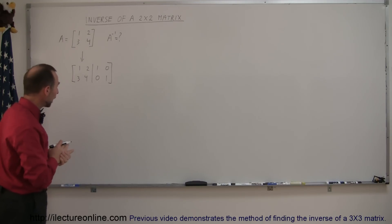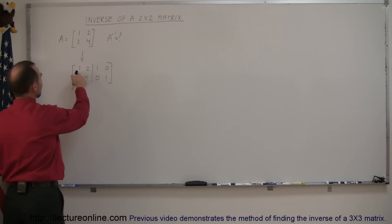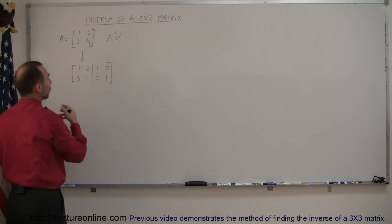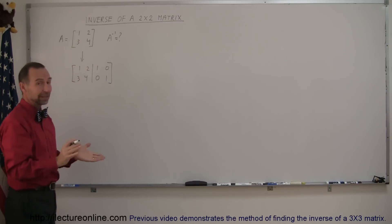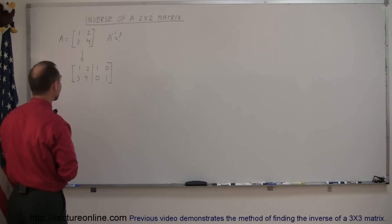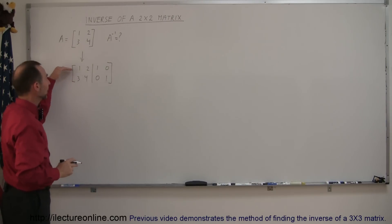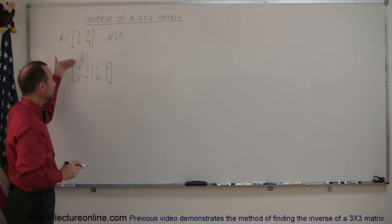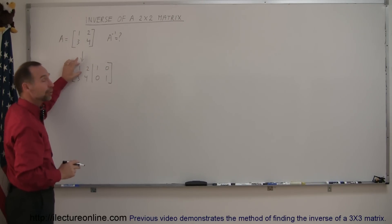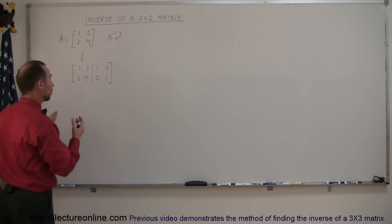The first thing you want to do is make sure that the upper-left element is a 1. Since it's already a 1, we can leave it alone. If it wasn't a 1, we would take the whole row and divide it by whatever number that was.